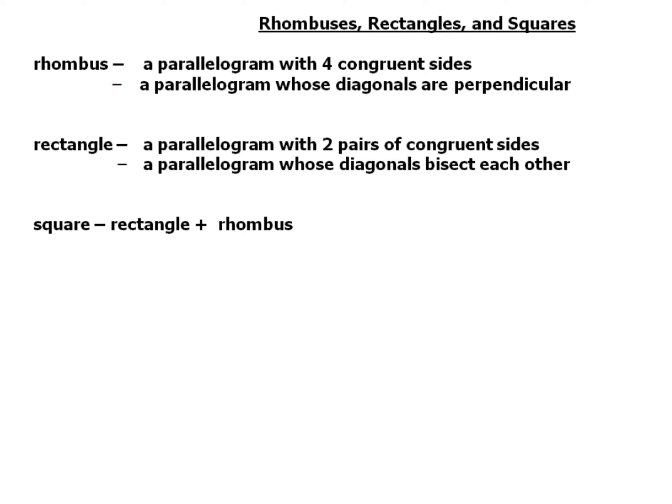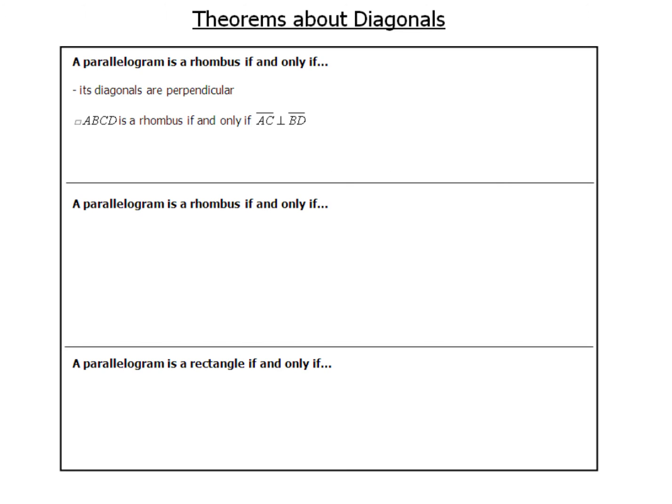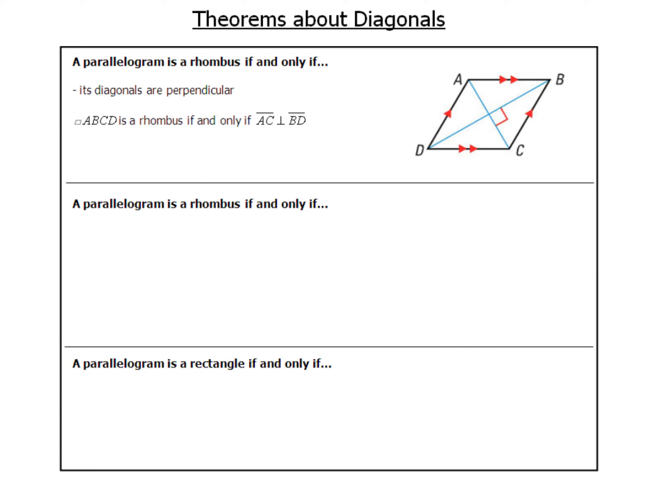Before we do examples, let's look at a couple of theorems about diagonals. One theorem states: a parallelogram is a rhombus if and only if its diagonals are perpendicular. Using the parallelogram symbol, parallelogram ABCD is a rhombus if and only if AC is perpendicular to BD. Let's draw a picture to represent that situation.